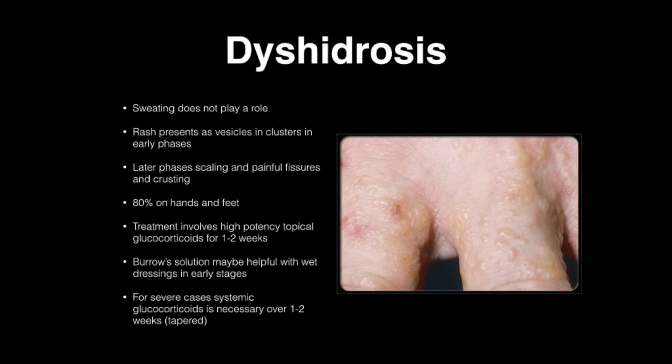Treatment involves high-potency topical steroids for one to two weeks. Burrow solution will be helpful with wet dressings in the early stages. Systemic glucocorticoids are necessary for more severe cases over one to two weeks in a tapered dose.